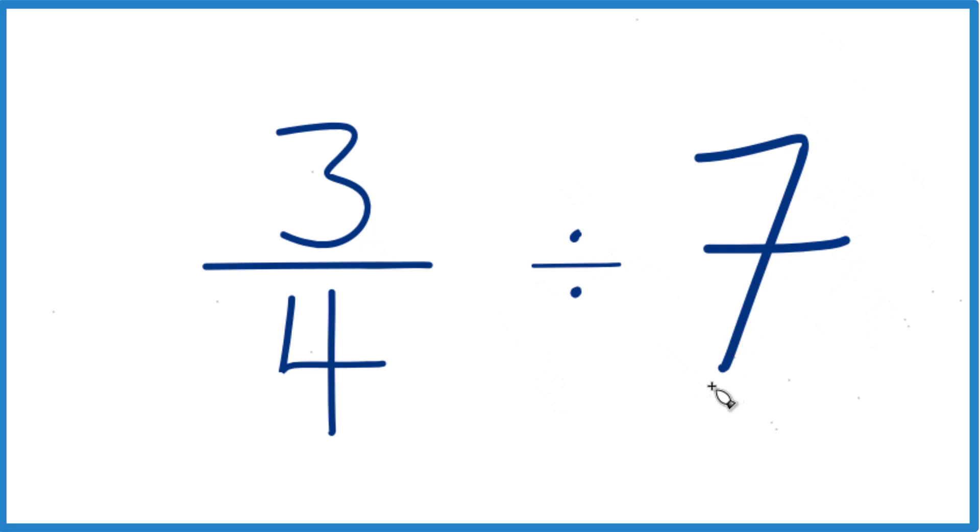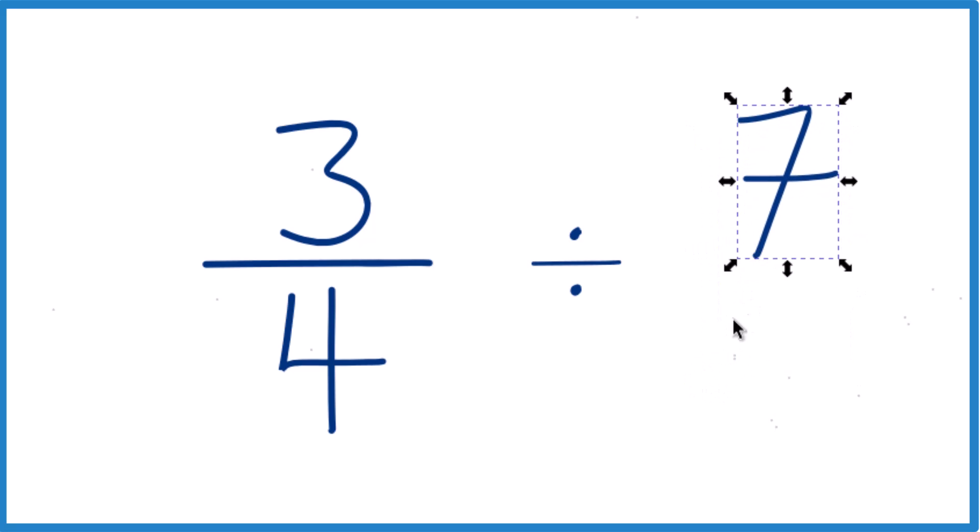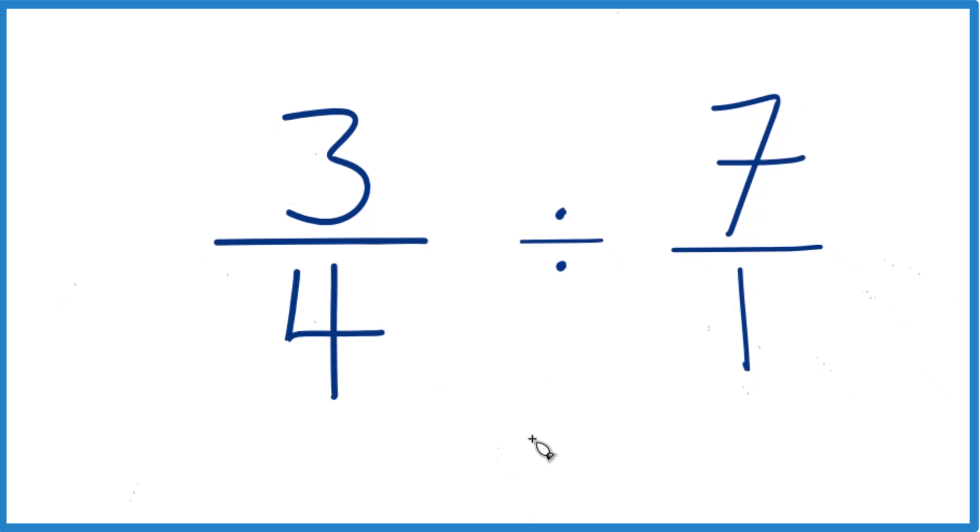Next, let's take this seven here. And instead of seven, I'm going to call this seven over one. Because seven over one, it's still seven. Seven divided by one is seven. But now everything lines up.